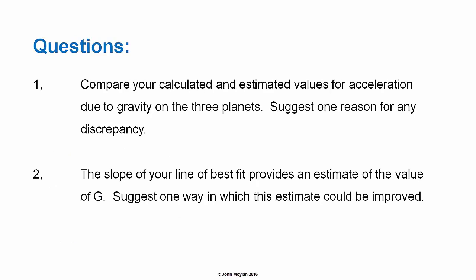The questions for this activity ask you to: compare your calculated and estimated values for acceleration due to gravity on the three planets and suggest one reason for any discrepancy; and suggest one way in which the estimate from the slope of your line of best fit could be improved. Once again there are full worked solutions and answers to all of these questions in the next lecture.